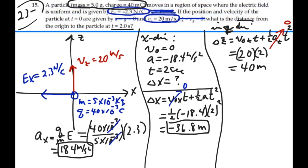So there's our two components of our displacement. They're perpendicular. So our total distance from the origin equals the square root of x displacement squared plus z displacement squared.